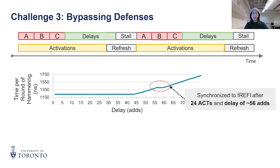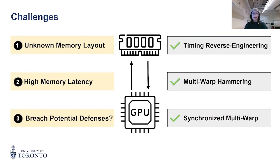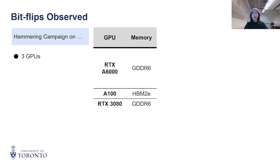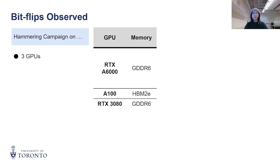The key takeaway is: by aligning our hammering with DRAM refresh periods, we can reliably overflow the tracker and bypass in-DRAM defenses. We have now solved all three challenges and are ready to see bit flips. We ran a hammering campaign on three GPU models, an RTX A6000 with GDDR6 memory.